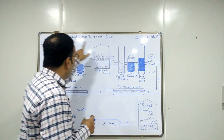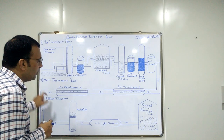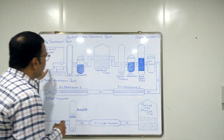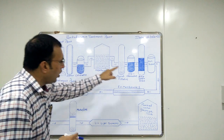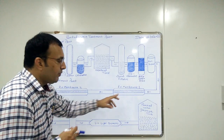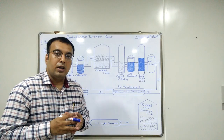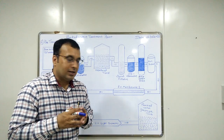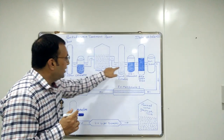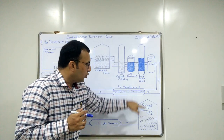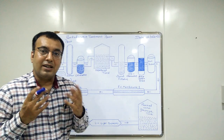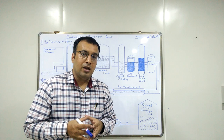Here you can see the whole diagram of the purified water system. This system consists of many accessories, also called units. Each unit has its own function to remove particular impurities and contaminants.